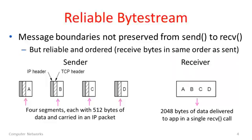So this reliable ByteStream model — in a reliable ByteStream model, as you've surely guessed, message boundaries are not preserved between send and receive calls. The bytes that are sent by the sender are delivered to the other side reliably and in the same order, so that when you read them, you get what you'd expect. But the units in which they're sent down have no message boundaries preserved. For example, the sender makes four calls to send, sending half a kilobyte with every call, so two kilobytes are sent to the network. On the receiver end, it would be possible to make a single receive call and receive all two kilobytes at once, depending on the timing of the calls.